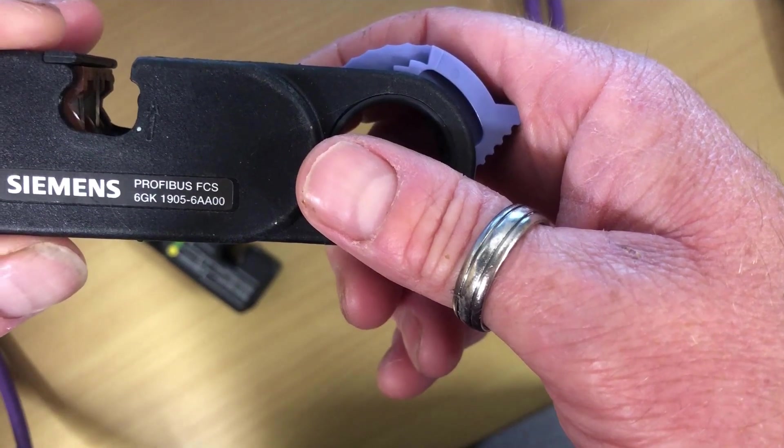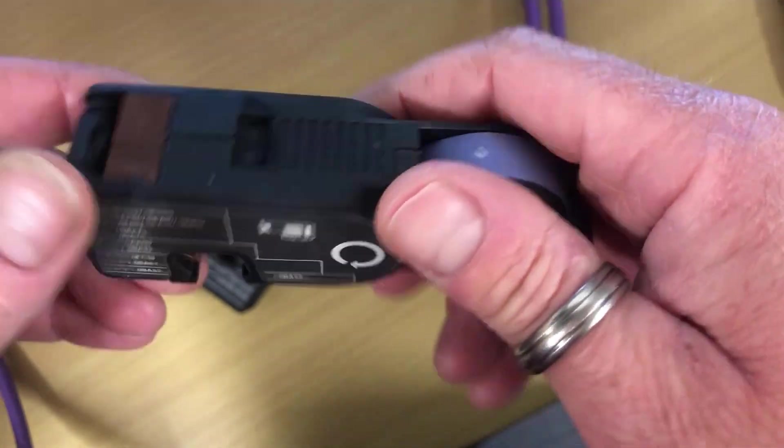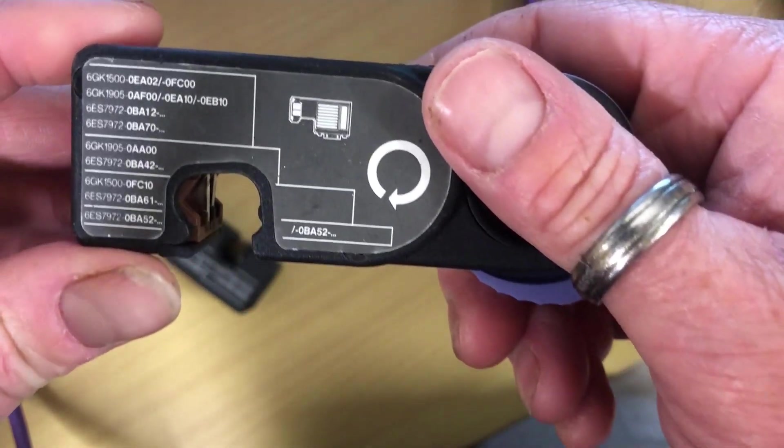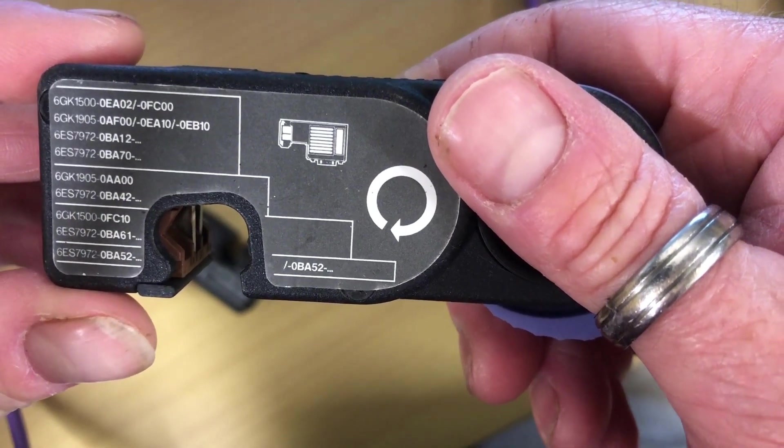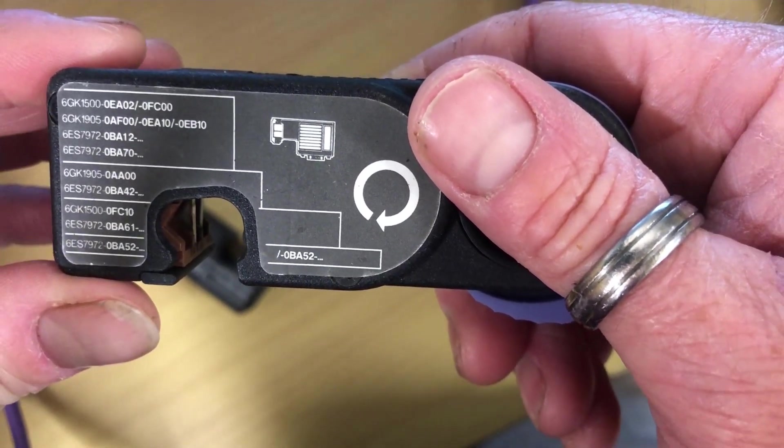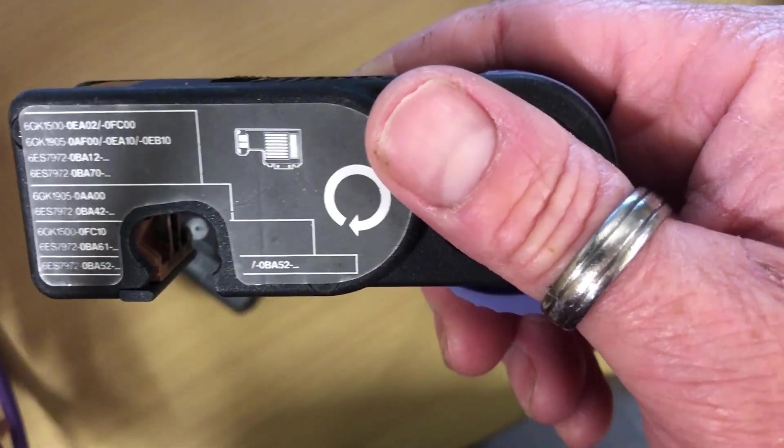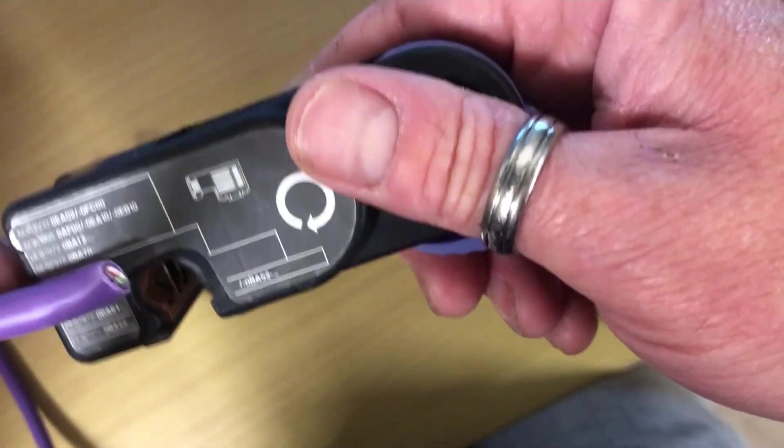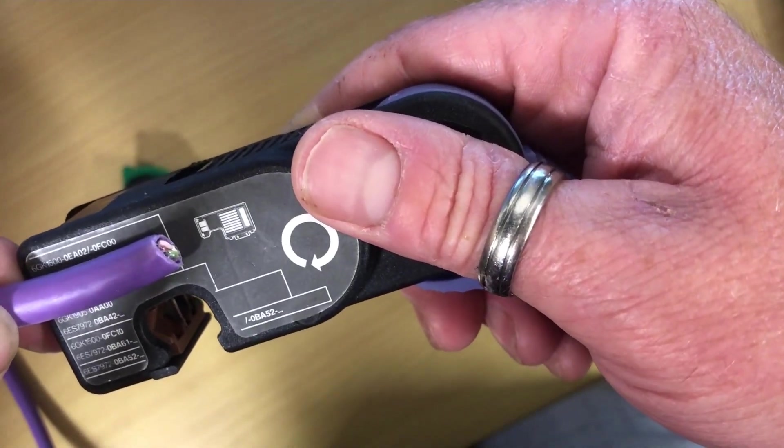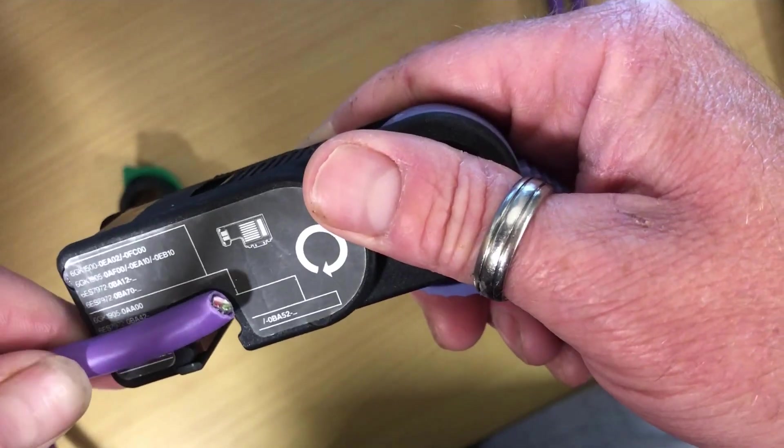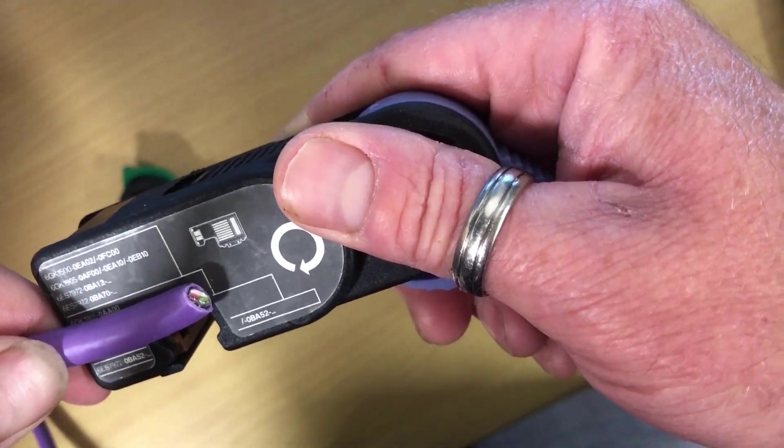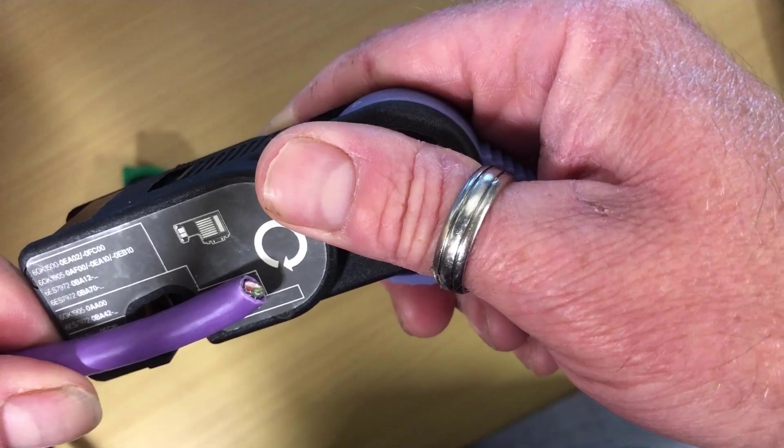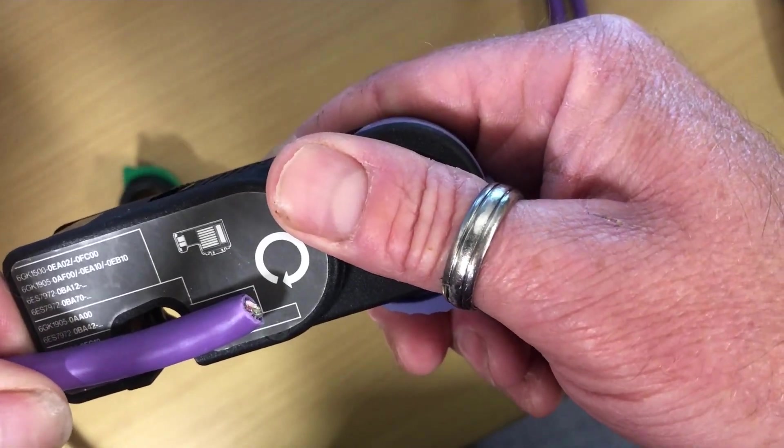You can see the part number there, and then when you flip that over there's some part numbers for all of the different adapters that you can use. So basically you take your cable and you measure it up against the part number that you're using. That's the professional way of doing it. I'll show you the Steve Howe's way of doing it in a minute.